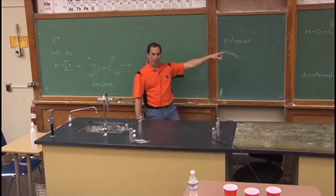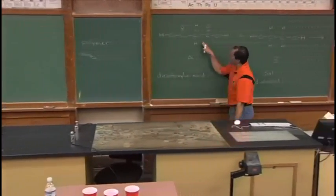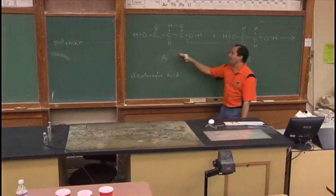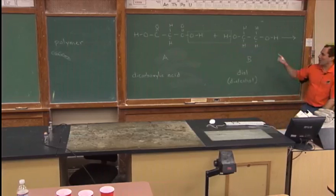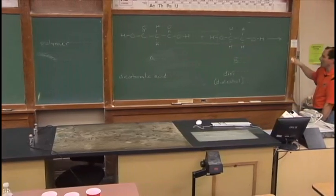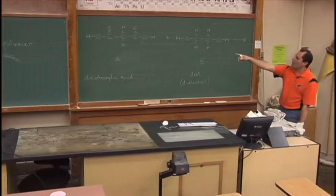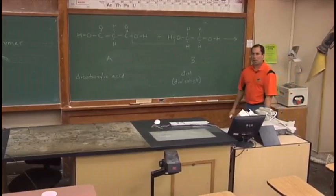What we're going to do in chemistry over here to the right is take some compounds. This one is called compound A. This one is called compound B. And we're not going to hook A to B. We're going to hook A to B to another A to another B to another A to another B. We're going to link them back and forth. A, B, A, B, A, B, billions and trillions and trillions of times.